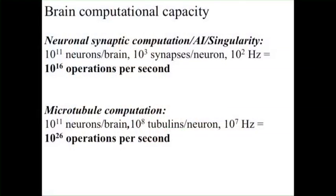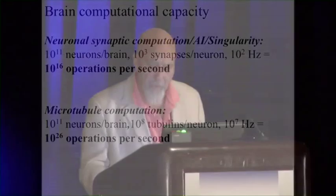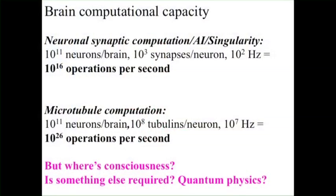If microtubules are processing information, as many of us believe, that raises the information capacity of the neuron tremendously. Without microtubules you get about 10 to the 16th operations per second. With microtubules you get 10 orders of magnitude increase — 10 to the 26th operations per second — which is very unpopular among AI types trying to simulate the brain. However, we can ask the same question: how does that explain consciousness? It's just more computation. Is there something else required? Might that be quantum physics?